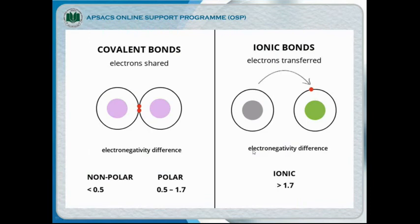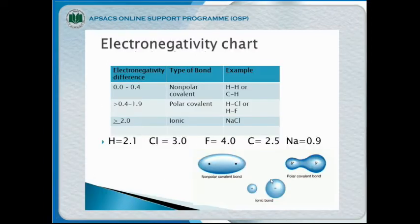Comparing covalent and ionic bonds: in covalent bonds, physical sharing of electrons is observed, while in ionic bonds, transfer of electrons is observed. For electronegativity difference: non-polar is 0 to 0.3, polar covalent is 0.3 to 1.7, and above 1.7 it means ionic bond. From the electronegativity chart, hydrogen has 2.1, chlorine has 3.0, fluorine has 4.0 (highest), carbon has 2.5, and sodium has 0.9.